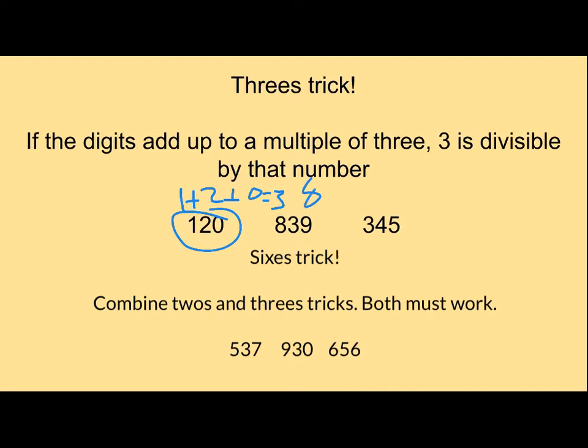If I do 8 plus 3 plus 9, that will give me a total of 20. So this will not be divisible because 20 is not divisible by 3. It's not a multiple of 3.